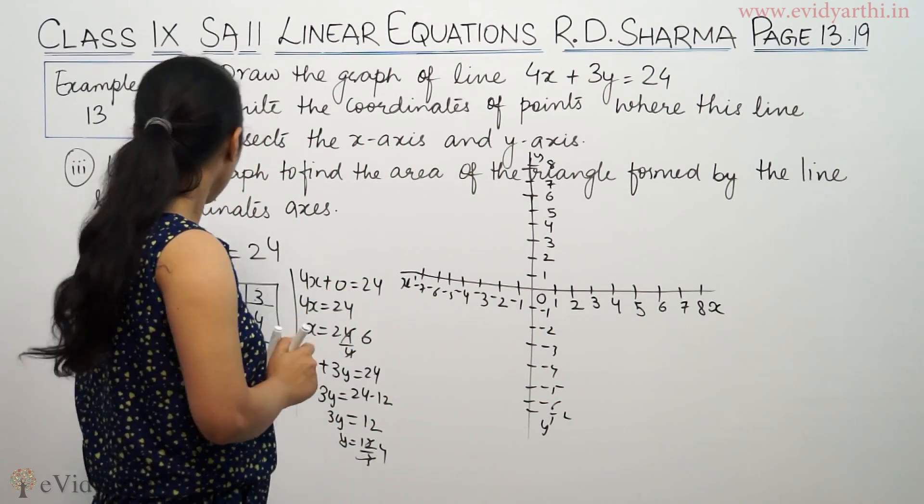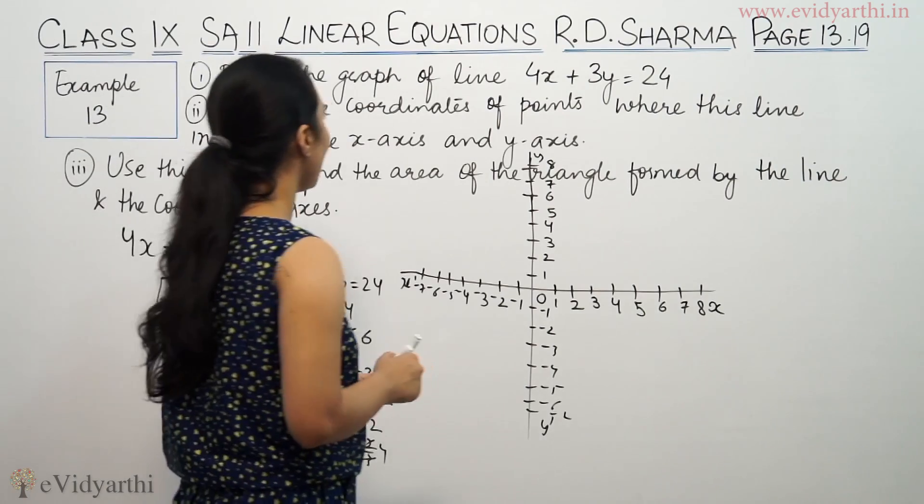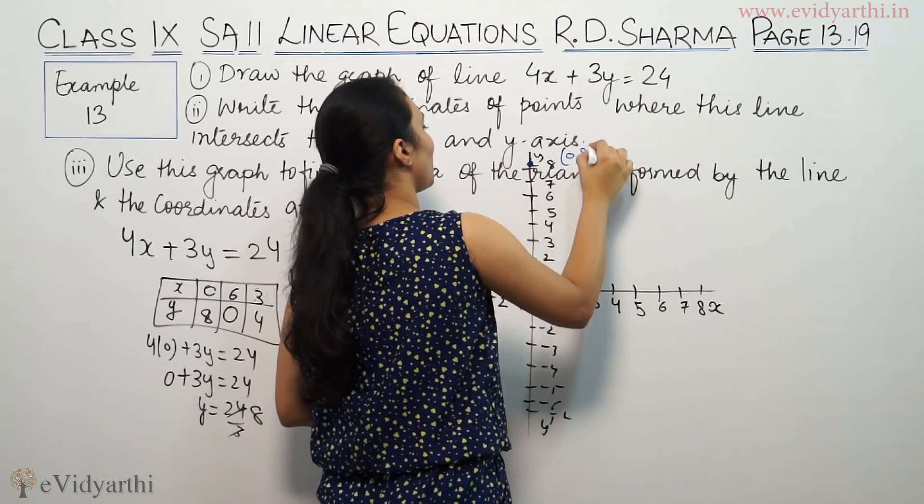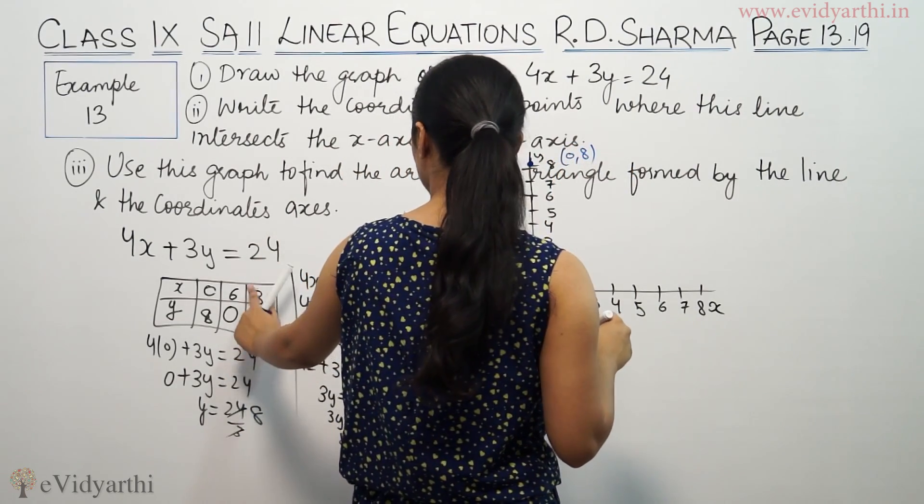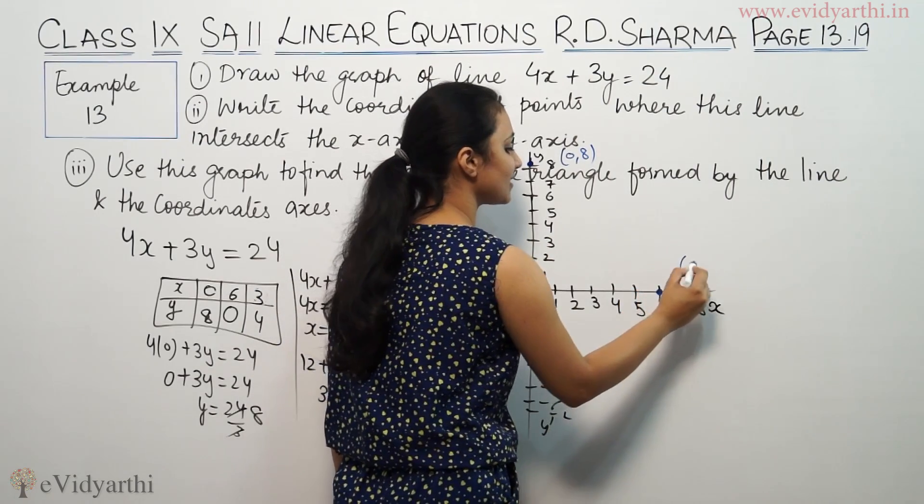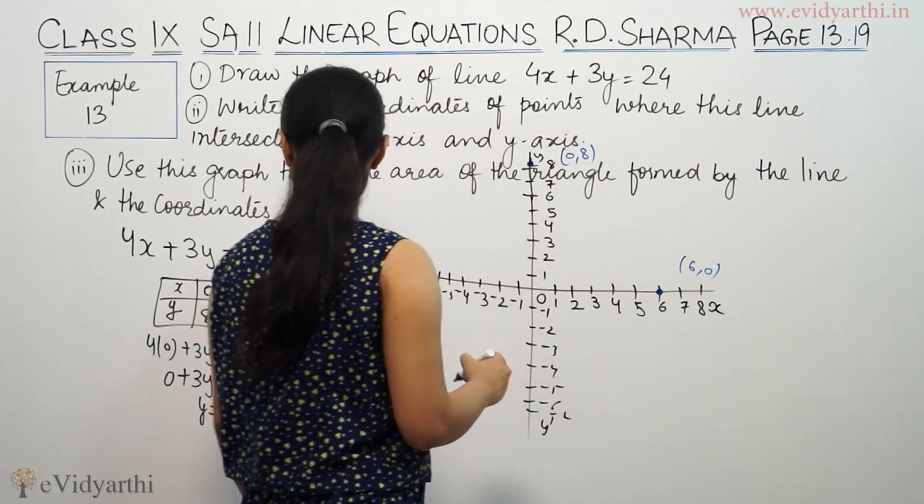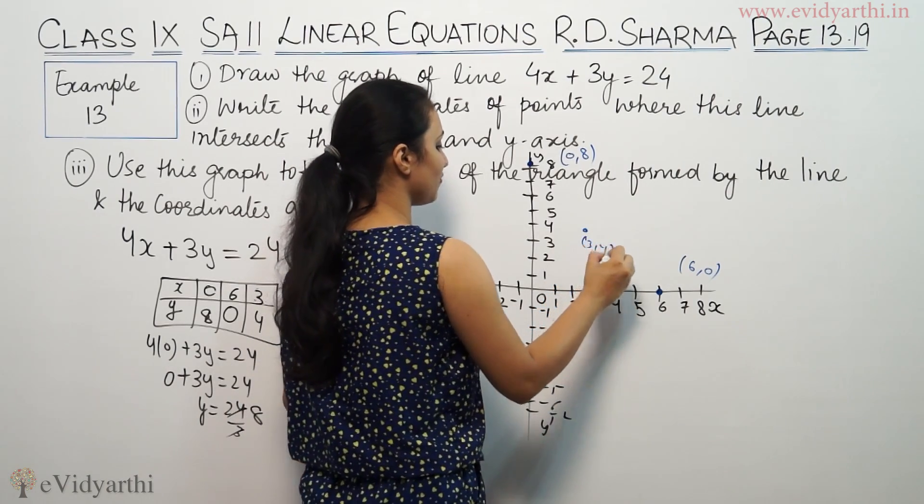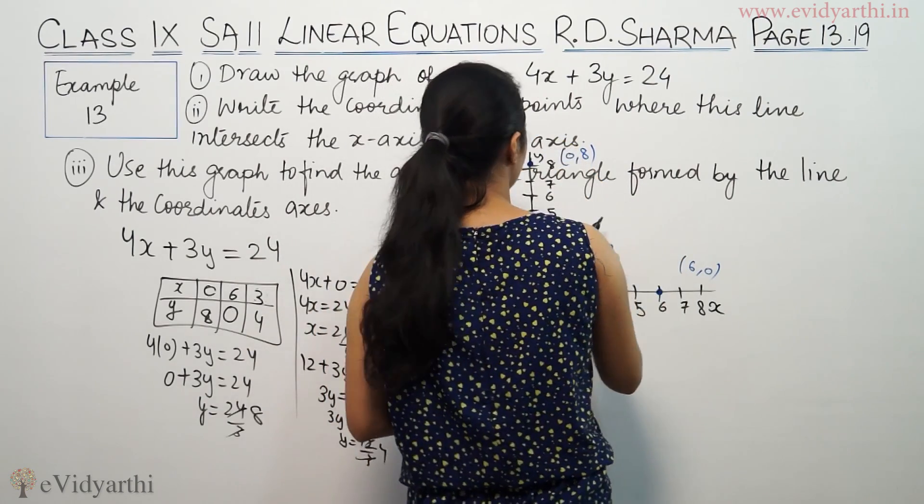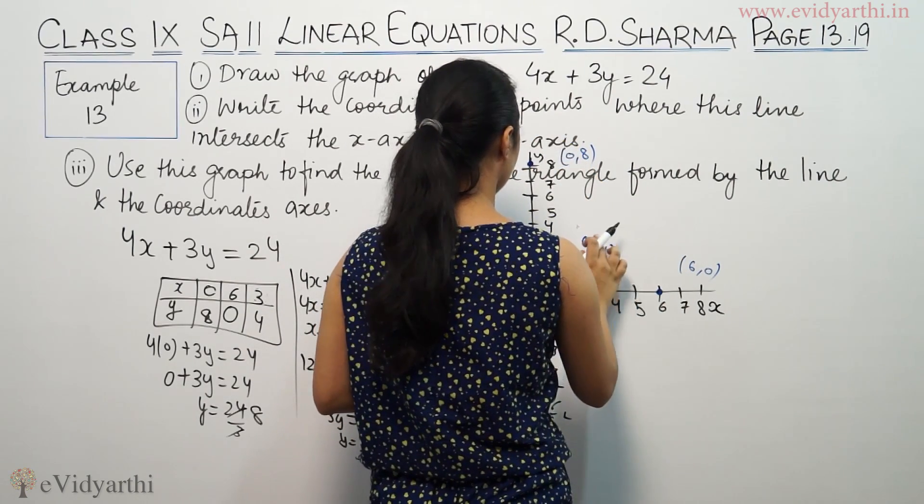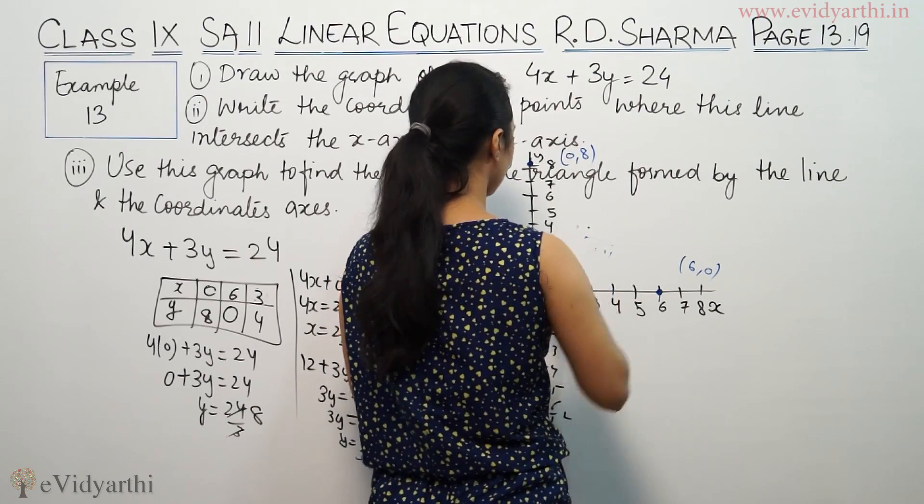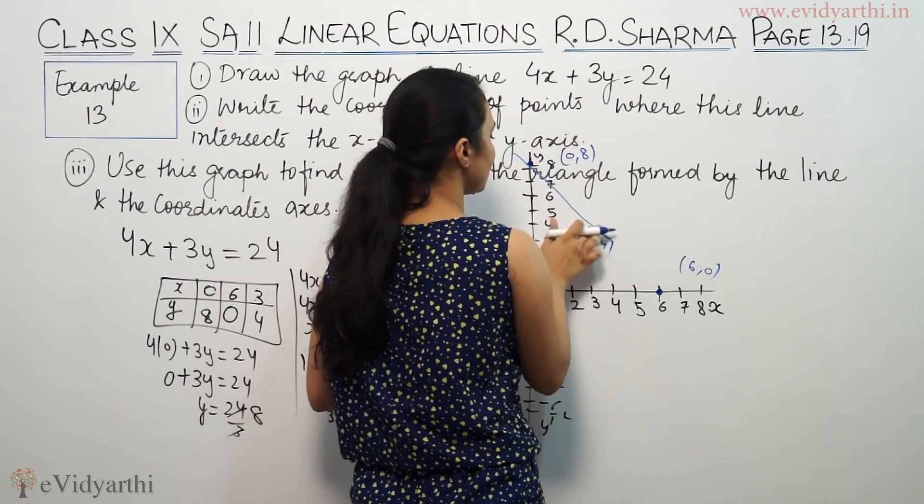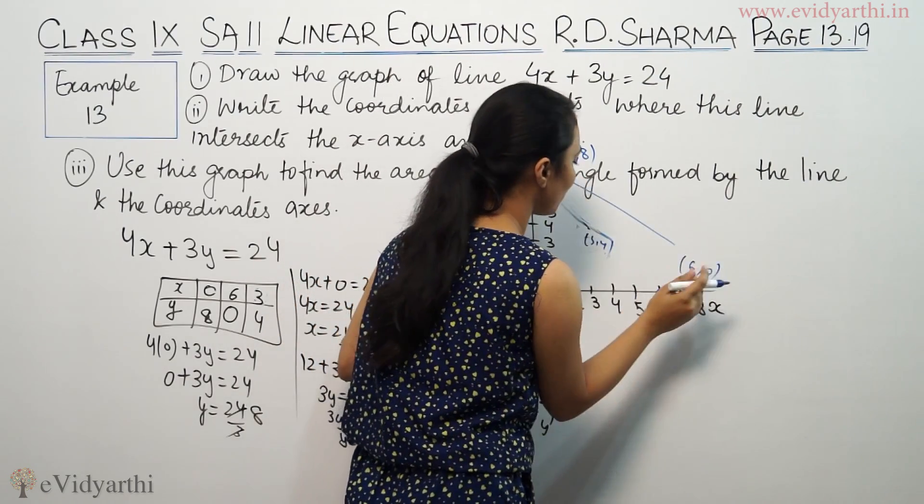Now, x is 0 and y is 8, this is point (0,8). When x is 6 and y is 0, this is point (6,0). When x is 3 and y is 4, this is point (3,4). Plotting these points on the graph.